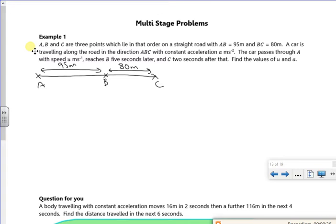It says a car has travelled along the road in the direction ABC with a constant acceleration of a metres per second squared. The car passes through A with speed u and reaches B five seconds later. So t is five to get to B. And C, two seconds after that.